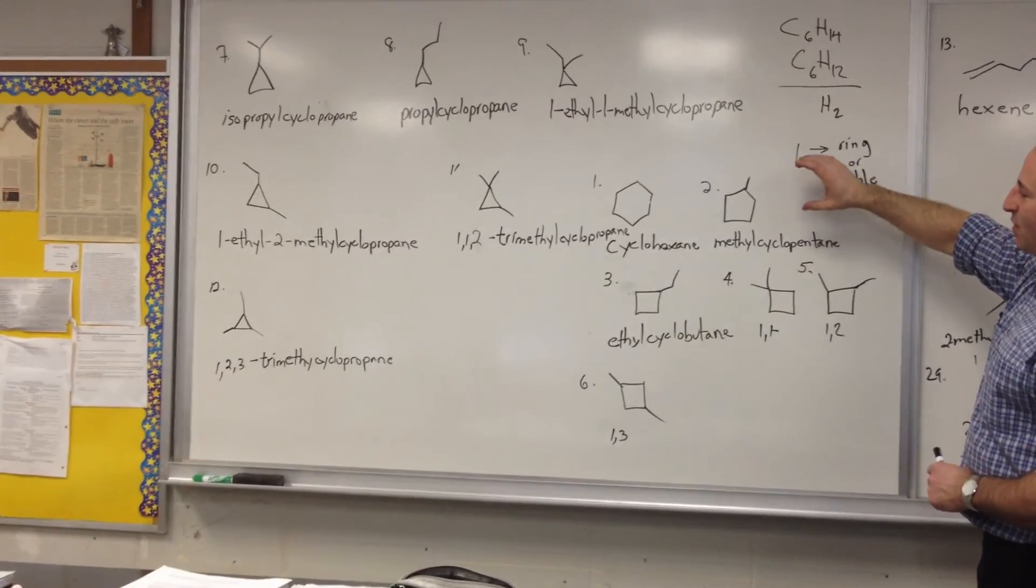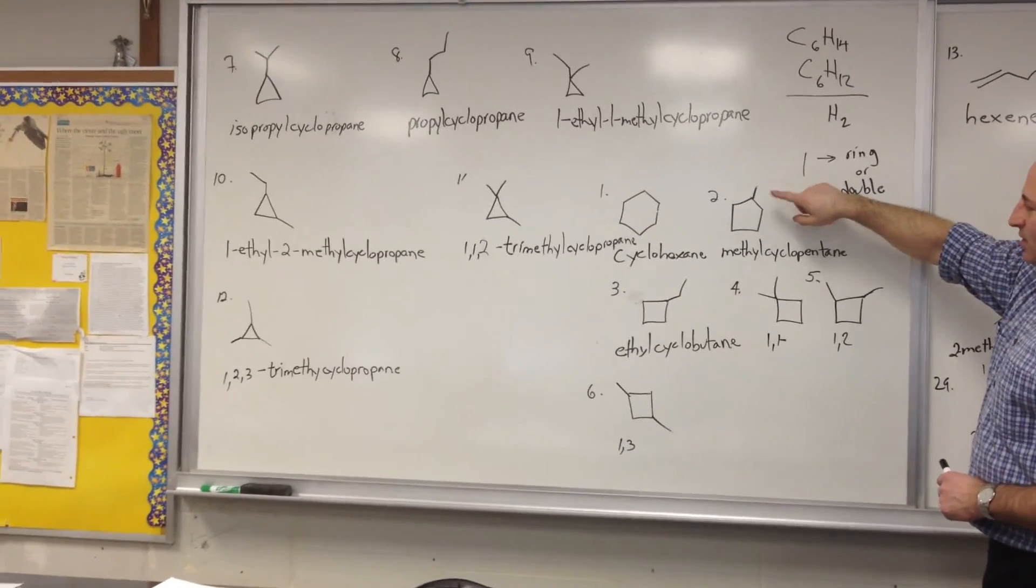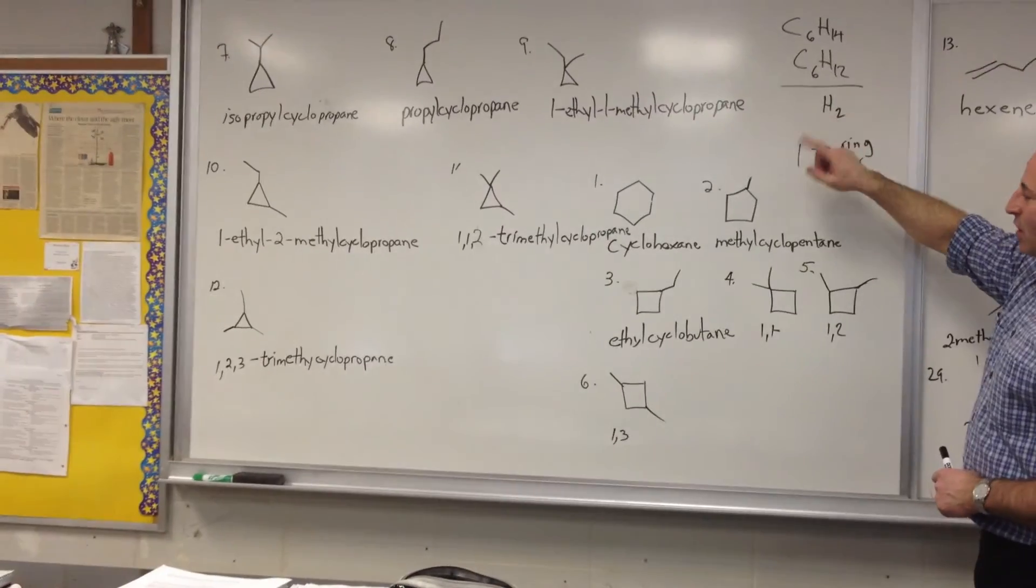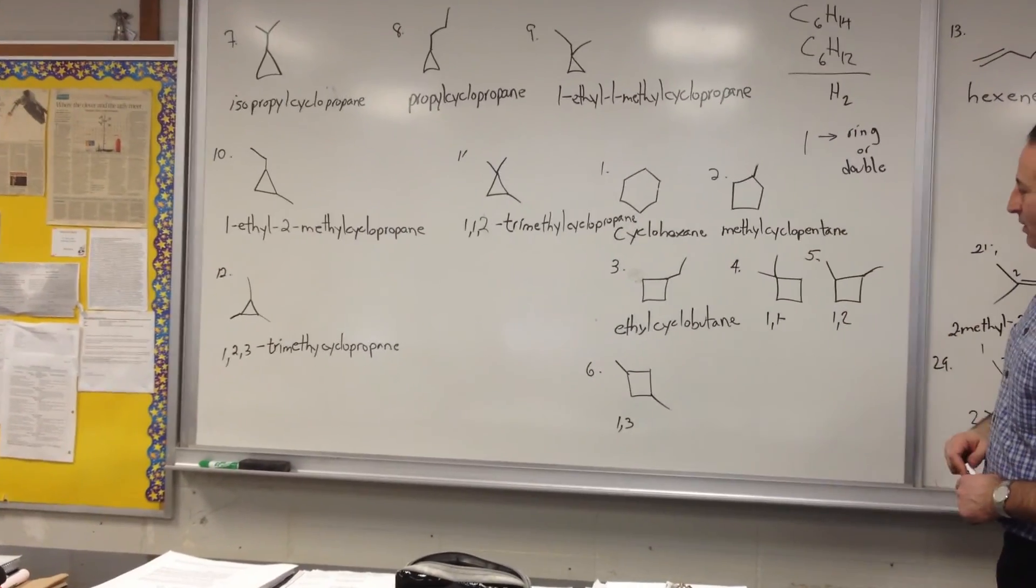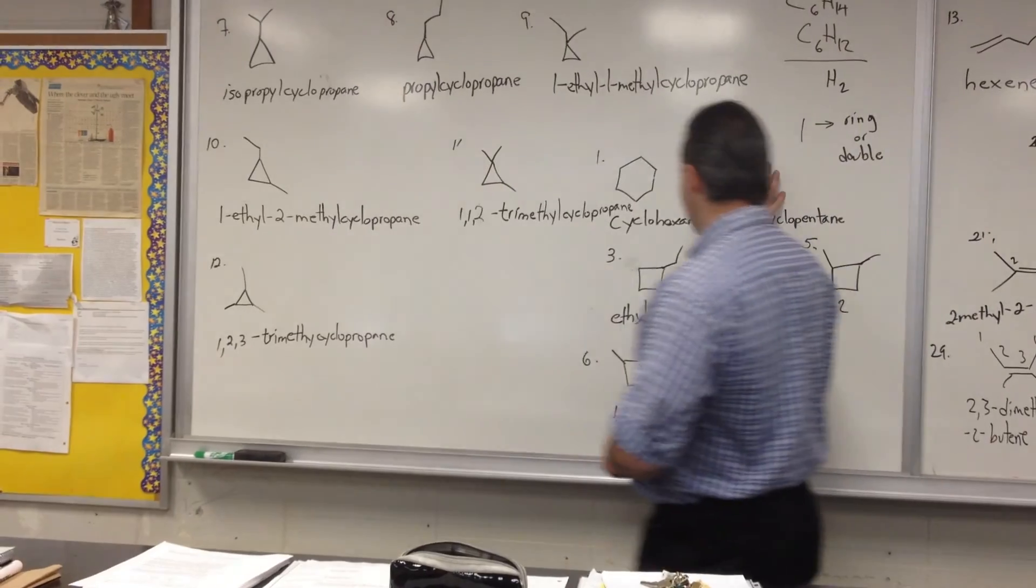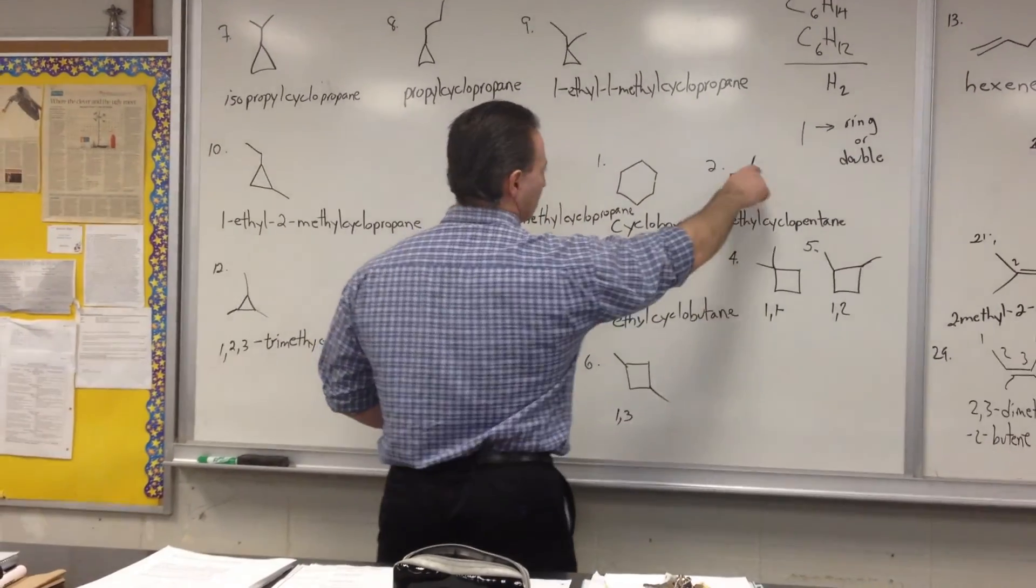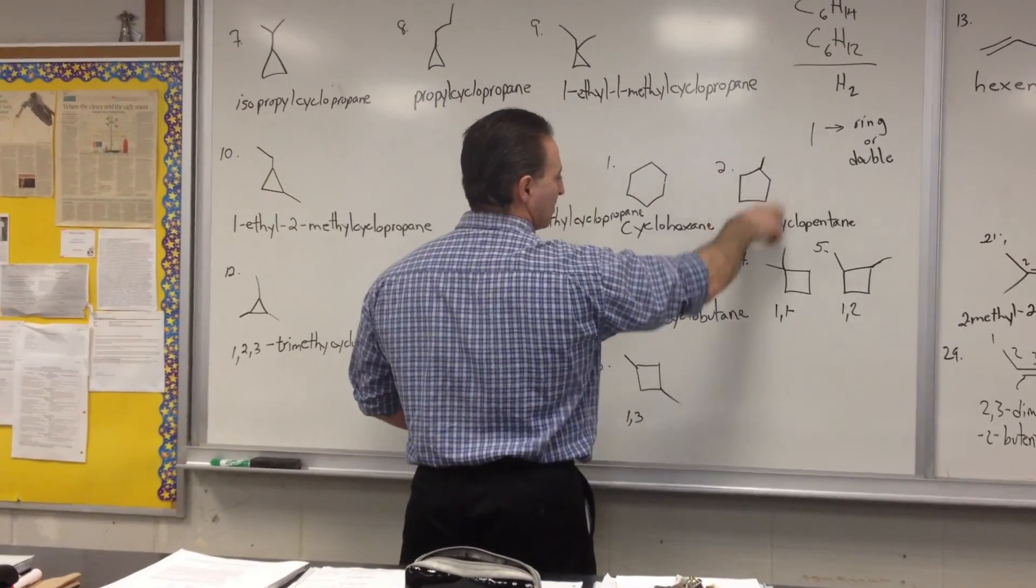Then we move down to 5-membered rings, and we get cyclopentane. But we have one extra carbon atom, so we put a methyl group on it. So we get methylcyclopentane. That exhausts all the possibilities with a 5-membered ring, because if we simply put them in a different position, it's still the same name.